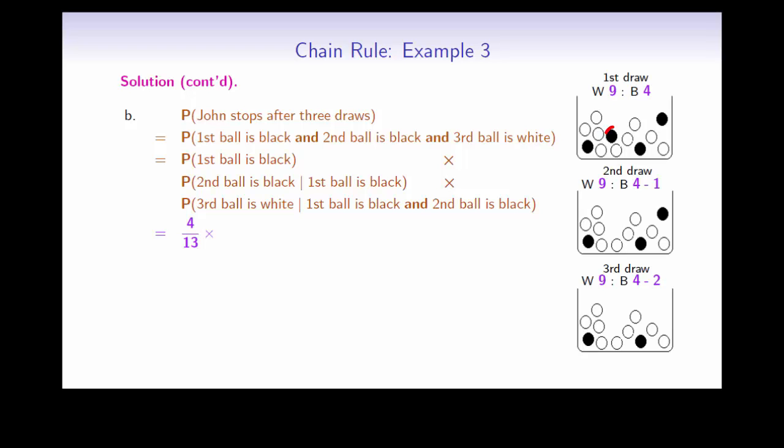In the first draw, we have 4 black balls out of 13. In the second draw, we are assuming that the first ball was black. That means we have only 3 black balls left, so 3 out of 12. And in the final third draw, we still have 9 white balls, so 9 out of 11. The total becomes 9 divided by 143.